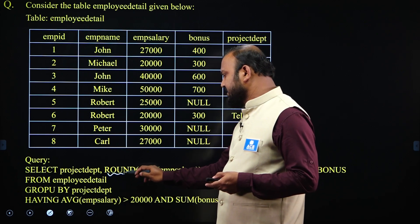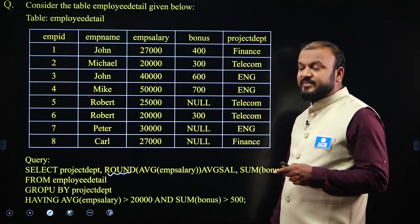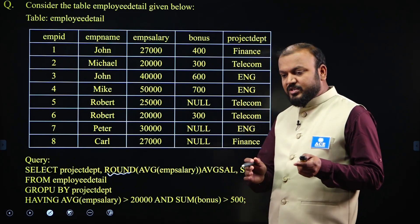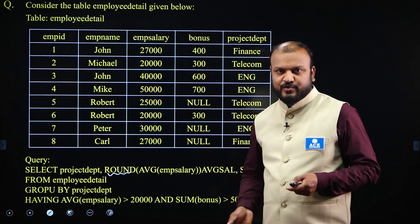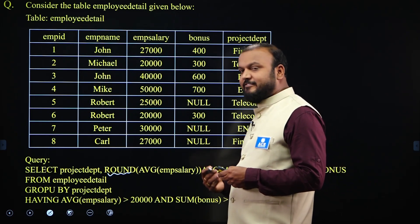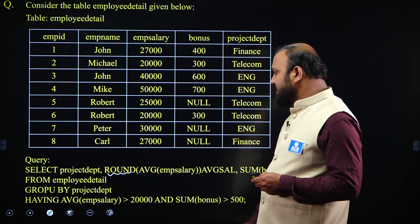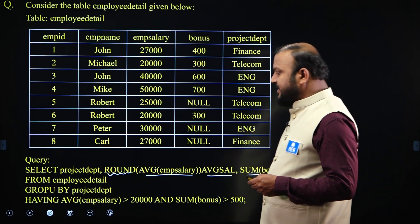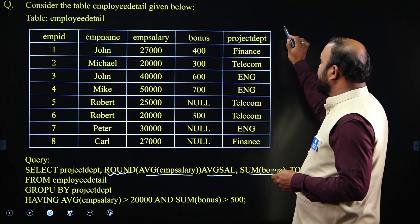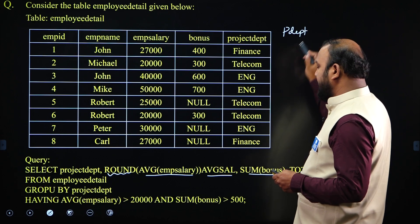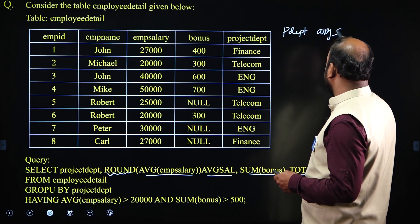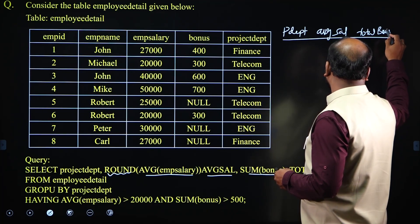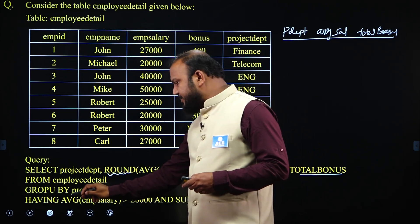This query is based on group by and having clauses. You also need to focus on SQL functions like round function, to-char function, and date functions, as some questions use these by default. The query selects project department, round of average of EMP salary as average salary, and sum of bonus as total bonus from employee detail, grouped by project department.